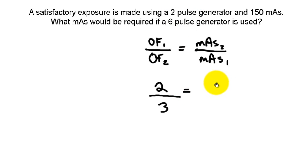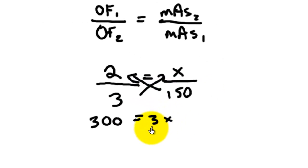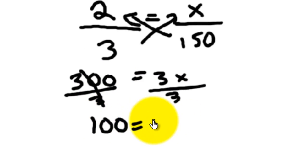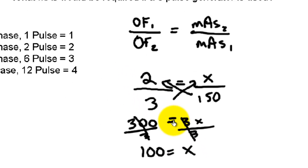Equals mAs 2, which we don't know, over mAs 1, which was 150. Now, we can't reduce this, so we're just going to cross multiply. 300 equals 3 times x, and divide by 3 each side of the equation. 100 equals x. Our new mAs is 100. So that's how you'd solve for an output factor equation.